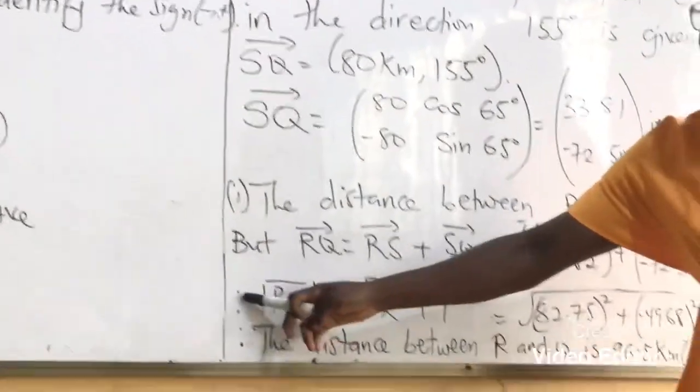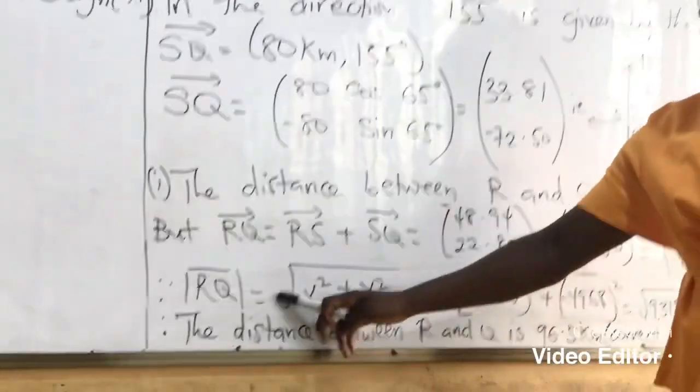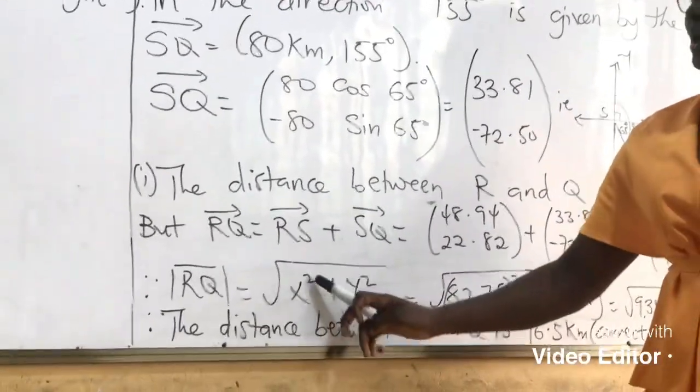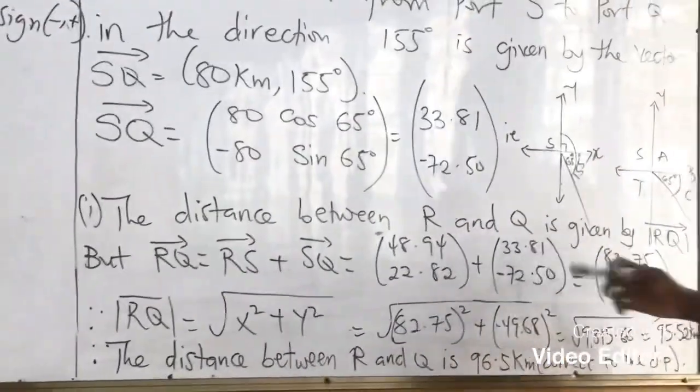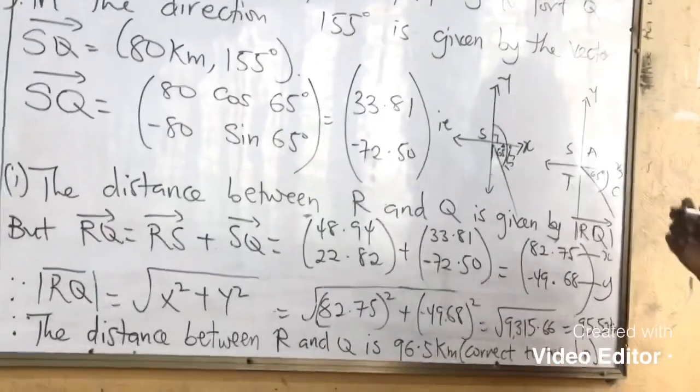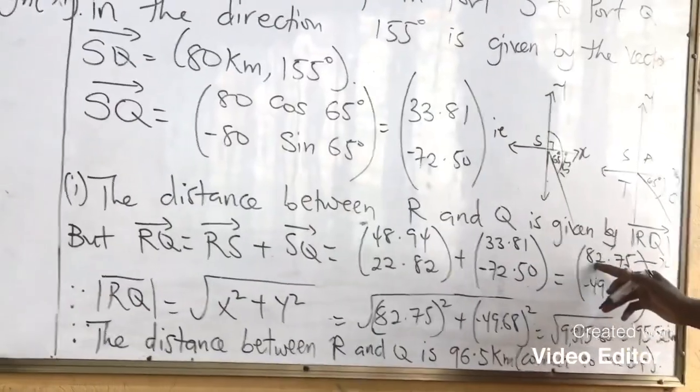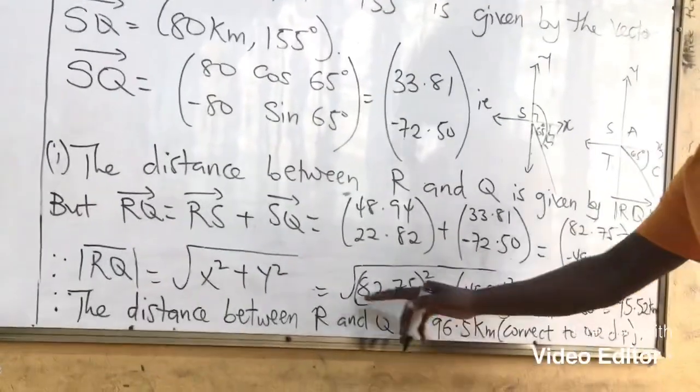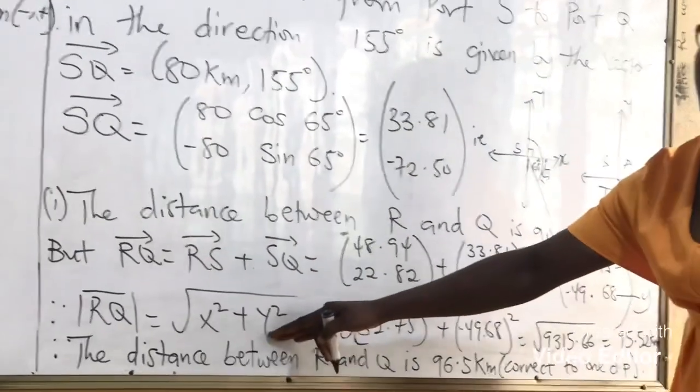The question is find the distance. So we now calculate the distance of the vector. The square root of X squared plus Y squared. This is our X. We will turn this one as our X and this as our Y. So we are going to get 82.75 all squared by substituting the values into our formula.